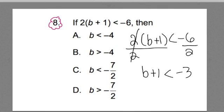Now I'm going to solve this algebraic inequality by minusing 1 on both sides, and you get b is less than negative 4.